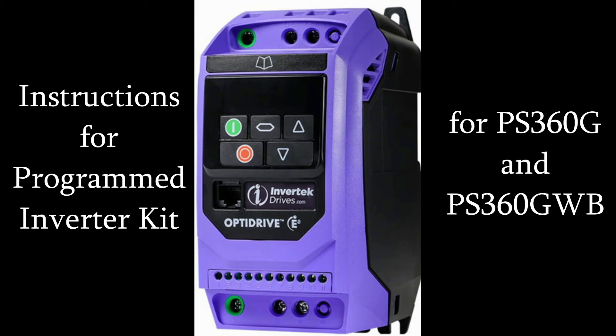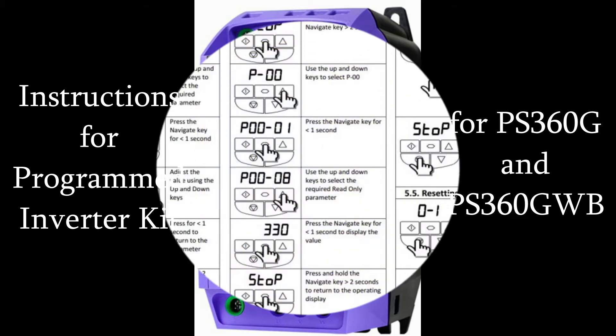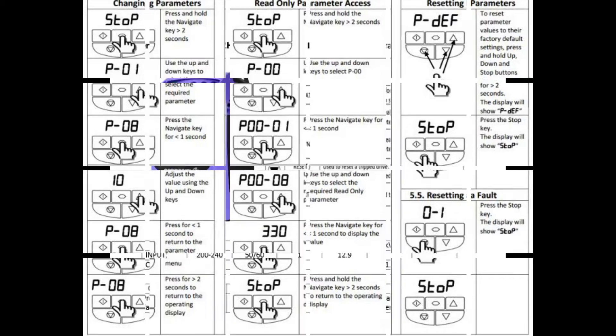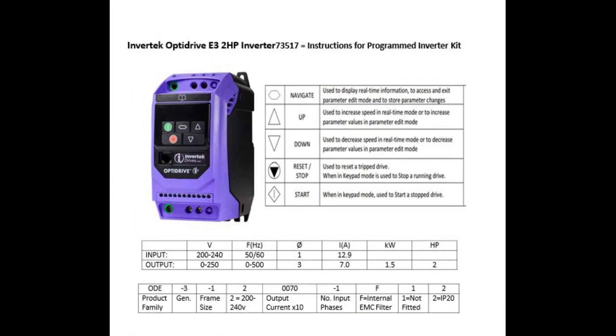Invertec OptiDrive Oven Settings. 4. PS360G. PS360 GWB. Invertec OptiDrive E32HP Inverter. Instructions for 73048 Programmed Inverter Kit.